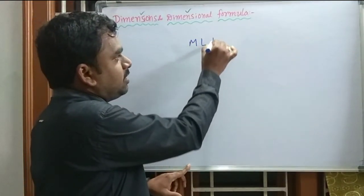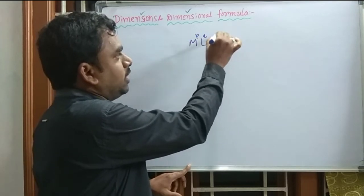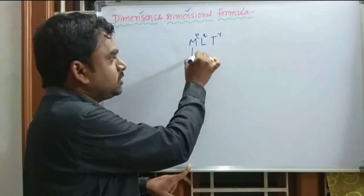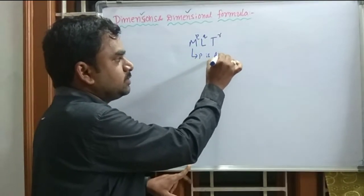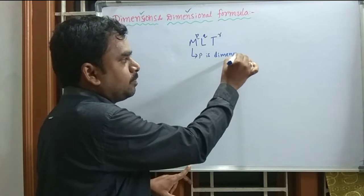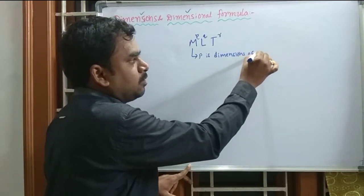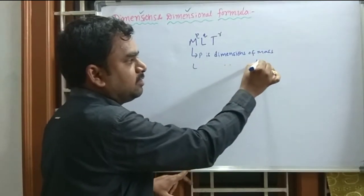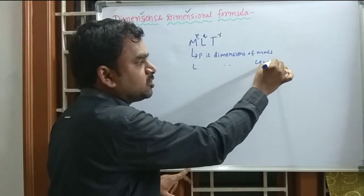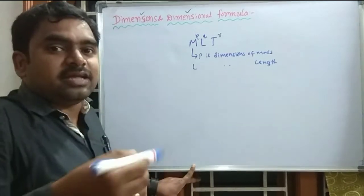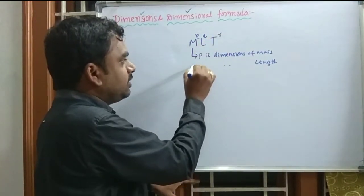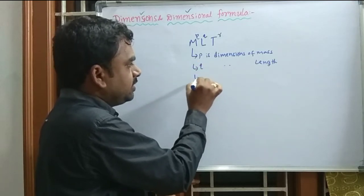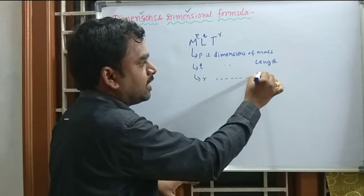The general dimensional formula is written as M^P L^Q T^R, where P is the dimension of mass, L is the dimension of length, and R is the dimension of time.